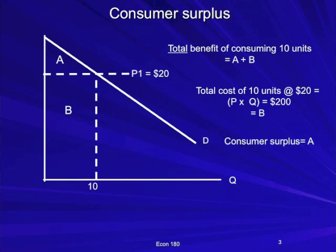Now let's look at consumer surplus — defined as the difference between what consumers are willing to pay and what they had to pay. The total benefit of consuming 10 units is the area under the demand curve. At a quantity of 10 units, the area under the demand curve, A plus B, is the total willingness to pay. Fortunately for consumers, they only had to pay the market price of $20, so price times quantity is $200, depicted by area B. The difference between what they were willing to pay, A plus B, and what they had to pay, B, is the consumer surplus of A.